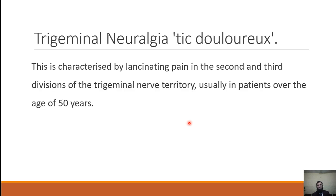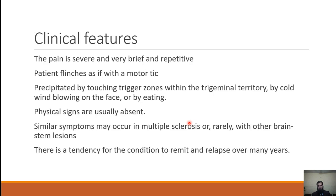Trigeminal neuralgia is characterized by lancinating, shock-like pain in the second and third division of the trigeminal nerve territory, usually in patients over the age of 50. The pain is severe, very brief, and repetitive — it is also called the suicide disease because patients are so distressed there are many case reports of actual suicides. Never take it as a minor disease. The patient flinches as if with a motor tick. Pain is precipitated by touching trigger zones within the trigeminal territory — touching, shaving, or eating. Physical signs are usually absent with no sensory impairment or motor weakness. Similar symptoms in multiple sclerosis are usually bilateral. There is a tendency for remission and relapse over many years.